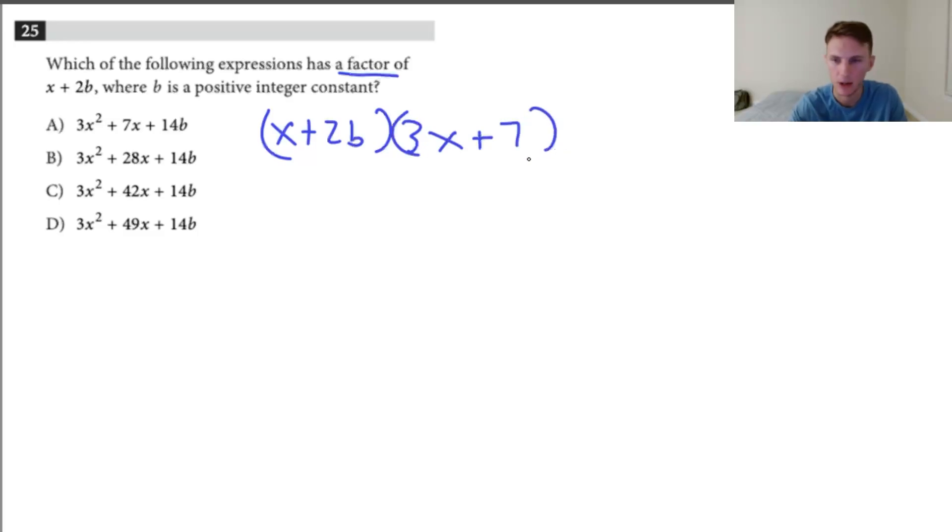And the way I knew how to do that, if you don't understand what I was talking about, is when you FOIL this, so when you do first, outer, inner, last, you know you're going to have to multiply x by 3x to get the 3x squared part. That's how I knew to get this. And then we know we have 14b, so we're going to multiply 2b times 7 at the end. So let me multiply this out now. So then we're going to get 3x squared plus 7x plus 6xb plus 14b.